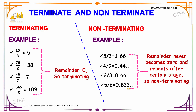Let's see some examples for terminating and non-terminating concepts. Terminating means ending up — in terms of division: 15 ÷ 3 gives 5, 76 ÷ 2 is 38, 49 ÷ 7 is 7, and 545 ÷ 5 is 109. For all these, the remainder becomes 0, so these are examples of terminating decimals.